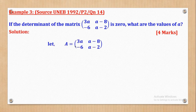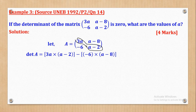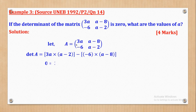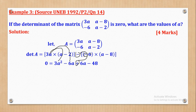Since the Determinant equals the product of the Major Diagonal entries minus the Minor Diagonal entries, Det(A) = 3A times (A minus 2) minus [negative 6 times (8 minus A)]. Expanding the brackets: 3A times A gives 3A squared, and 3A times negative 2 gives negative 6A. Then the minus and the negative cancel to give positive: positive 6 times A gives positive 6A, and positive 6 times negative 8 gives negative 48.